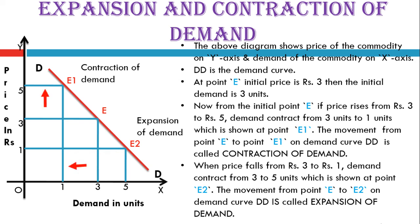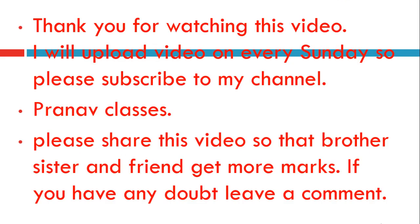Let me summarize the entire diagram. When price increases from 3 to 5, demand decreases from 3 to 1 — this movement is known as contraction of demand. When price decreases from 3 to 1, demand increases from 3 to 5 — this movement is known as expansion of demand.